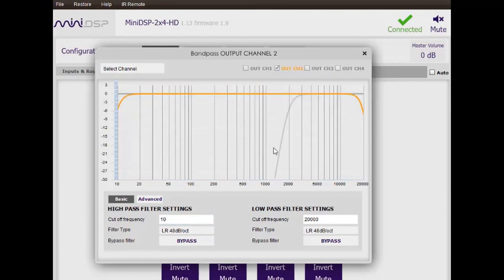So here you can see the resultant band pass filter for the tweeter, with the crossover point of 2 kHz.